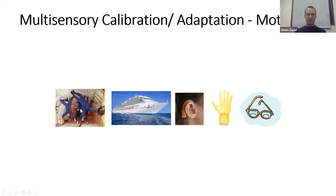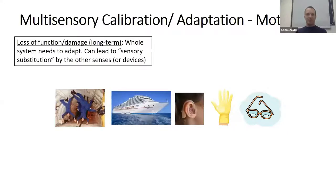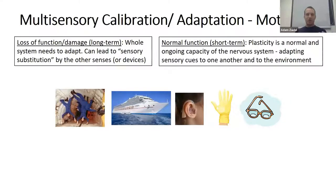You can see a couple of examples: if someone goes to space they suddenly lose their vestibular sense and need to adapt. But you don't need to go to space — simply take a cruise or use any appendage whether it's a hearing aid, gloves, or even glasses, which changes the way one sense interacts with the world. Adaptation is often studied within one sense, but that's not good enough, because when something happens — loss of function or anything like that — the whole system needs to adapt.